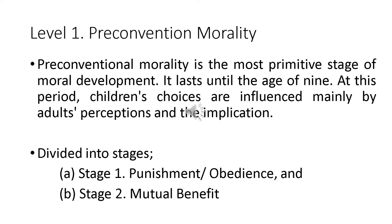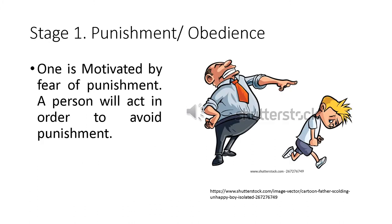Pre-conventional morality has two stages. The first stage is punishment or obedience, and stage 2 is mutual benefit. In stage 1, one is motivated by fear of punishment — a person will act in order to avoid punishment. This is the earliest stage of moral development. The authority of elders is instilled in the children, and their instructions are absolute and fixed. A child will follow the elder's instruction to avoid a punishment or consequence.